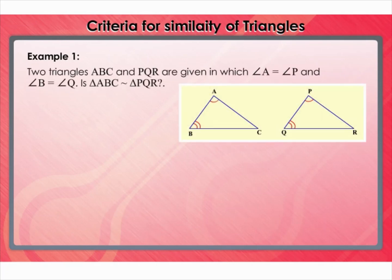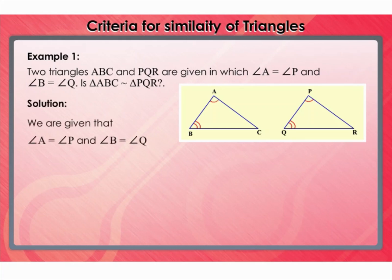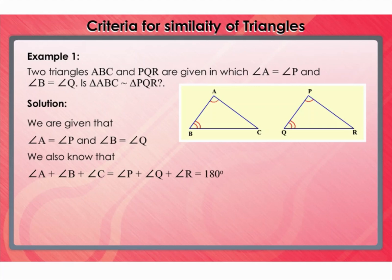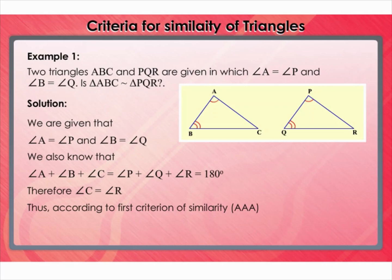In the figure, two triangles ABC and PQR are given in which angle A equals angle P and angle B equals angle Q. Is triangle ABC similar to triangle PQR? Solution: We are given that angle A equals angle P and angle B equals angle Q. We also know that angle A plus angle B plus angle C equals angle P plus angle Q plus angle R equals 180 degrees. Therefore angle C equals angle R. Thus, according to the AAA criterion of similarity, triangle ABC is similar to triangle PQR.